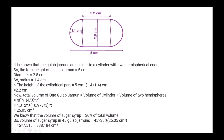The total height of a gulab jamun is 5 centimeter and diameter is 2.8 cm, so radius = 1.4 cm. Height of the cylindrical part = 5 − (1.4 + 1.4) = 2.2 centimeter. Total volume of one gulab jamun = volume of cylinder + volume of two hemispheres = 25.05 centimeter cube.